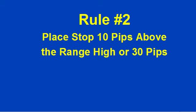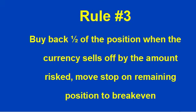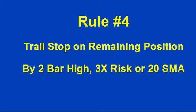Now, if the trade does work our way — let's say we risked 30 points and the position moves 30 points in our direction — we're going to take half the position off by the amount risked, and then move the rest to break even and manage the trade that way. For the second half, there are a variety of ways to exit: we can use a 2-bar high, we can use 3 times risk (so if we risked 30 points and the trade moves 90 points in our direction, we simply take the whole thing off the table).